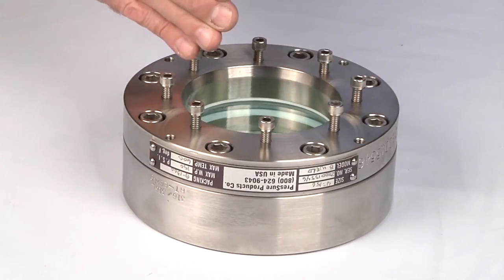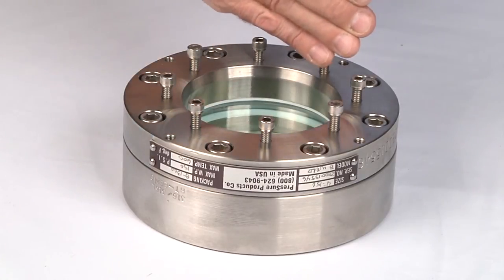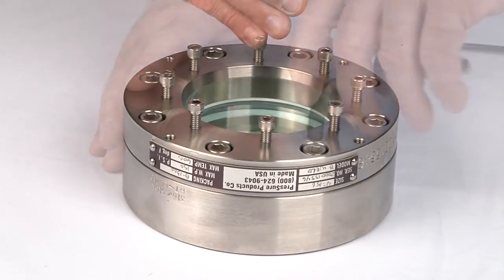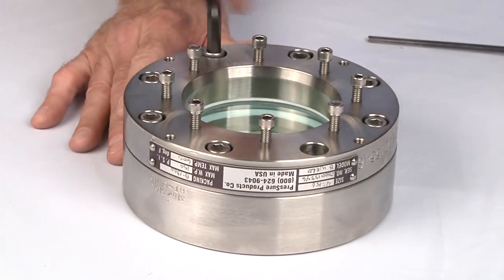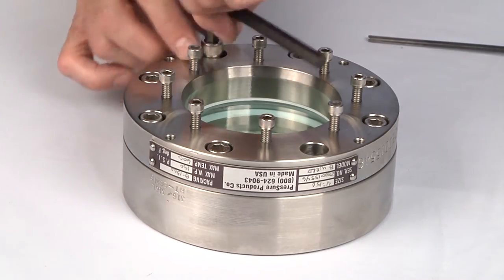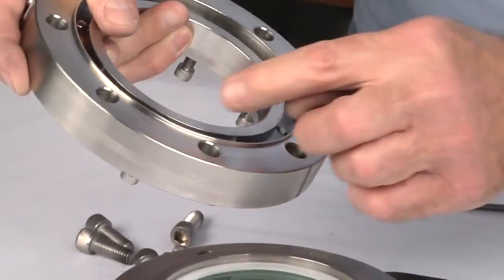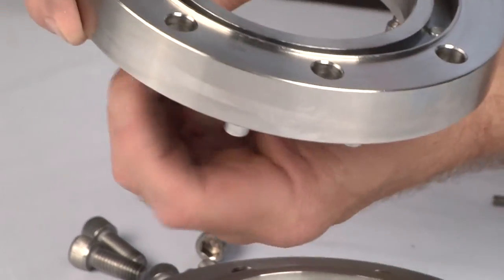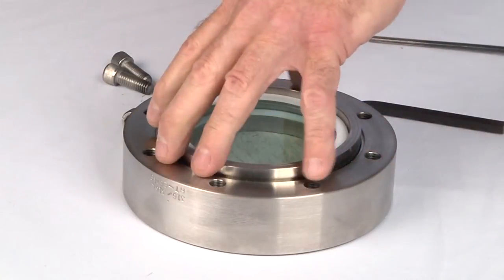Next, loosen the compression screws and remove the cap screws. You'll want to back out the compression screws until they're flush with the interior surface of the cap. Remove the compression ring.